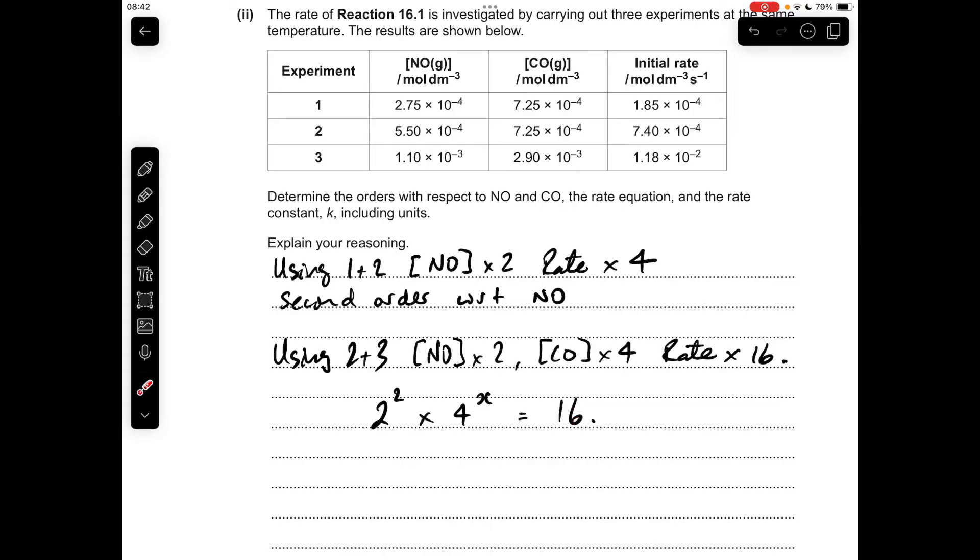And hopefully you can see that X needs to equal one. So doubling the NO concentration squared is going to give you four, times four to the power of one, which is four. So four times four gives you that 16.